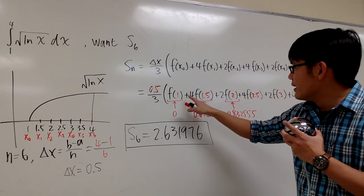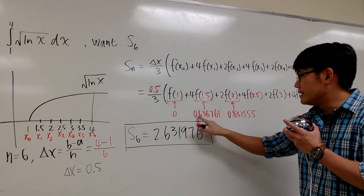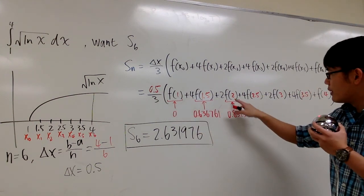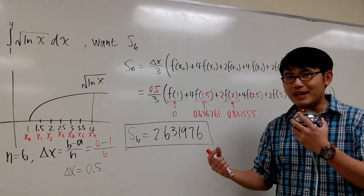Don't forget, for the middle part, you have to do, for example, this one, 4 times this number. And then for this one, you have to do 2 times this number. Just a lot of computational steps with the calculator.